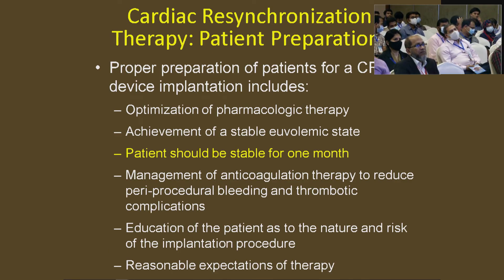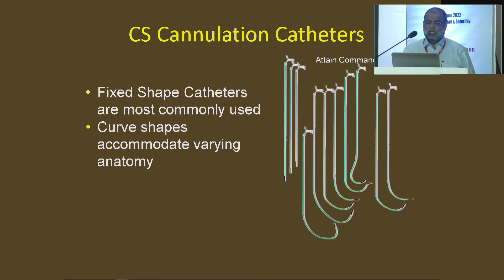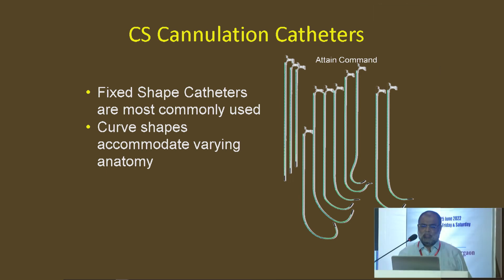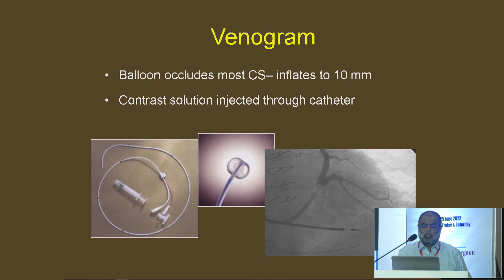Patient preparation is similar to a permanent pacemaker, but one should remember the patient should be stable for at least one month — otherwise the patient may develop heart failure on the implanting table. A major first step of CRT implantation is cannulation of the coronary sinus. I usually use an EP catheter to cannulate the coronary sinus, and sometimes I use a coronary sinus sheath. In the LAO view you can see the EP catheter going to the coronary sinus, and in the RAO view, you can see it is in the coronary sinus. After cannulation we inflate the balloon for the coronary sinus venogram to visualize the lateral vein.